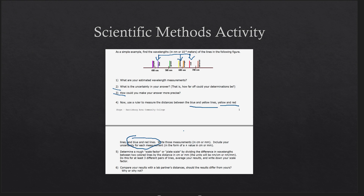I need the measurements and an estimate of your uncertainty — how far off do you think this might be? For example, if you measured 2.9 centimeters and think you're within one millimeter, you'd write 2.9 plus or minus 0.1 centimeters. Don't just write 2.9 centimeters — none of these measurements can be perfect, and there has to be some measurement of the error.